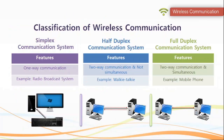Wireless communication systems are classified into simplex, half-duplex, and full-duplex. Simplex communication is a one-way communication system — radio broadcast is an example. Half-duplex is a two-way communication system but not simultaneous; for example, walkie-talkie. Full-duplex is also two-way and simultaneous — mobile phone is a great example of this system.